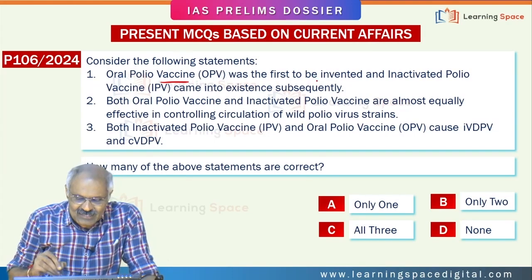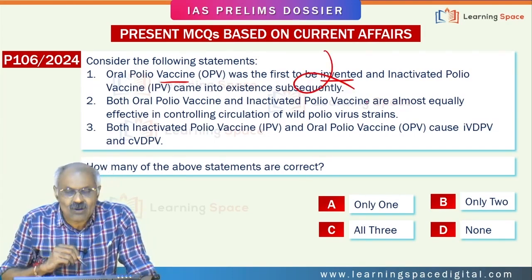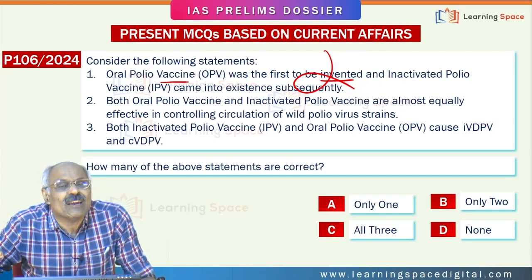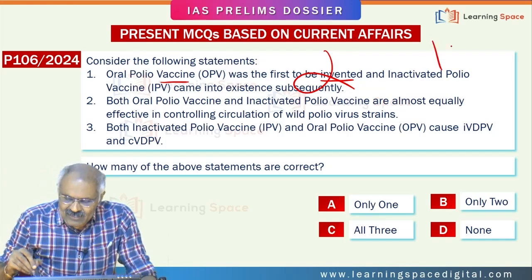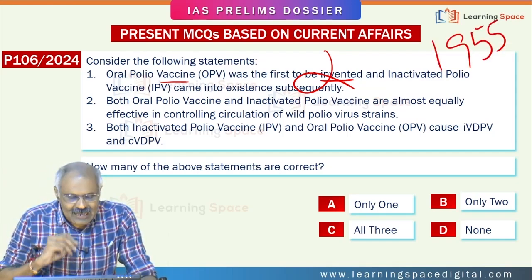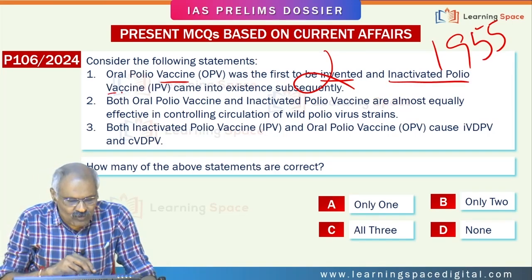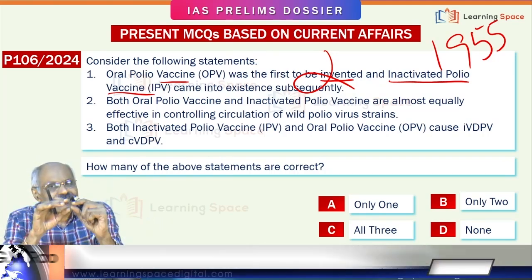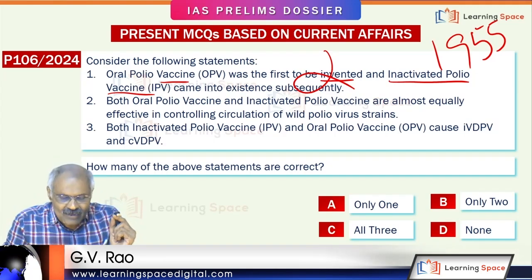The statement that oral polio vaccine was the first to be invented is wrong. The inactivated polio vaccine (IPV), which contains killed virus and is given through injection, was developed first in 1955. So the first statement is wrong.